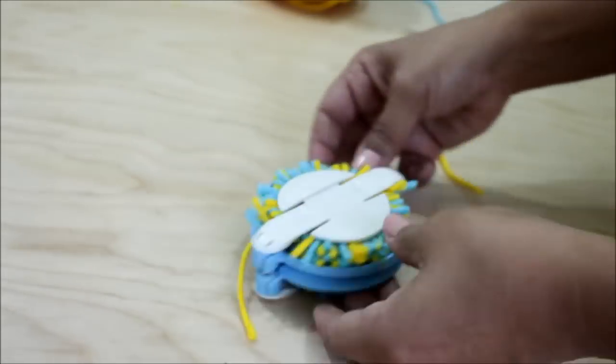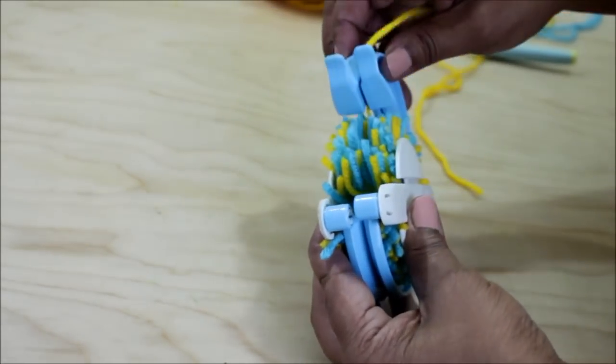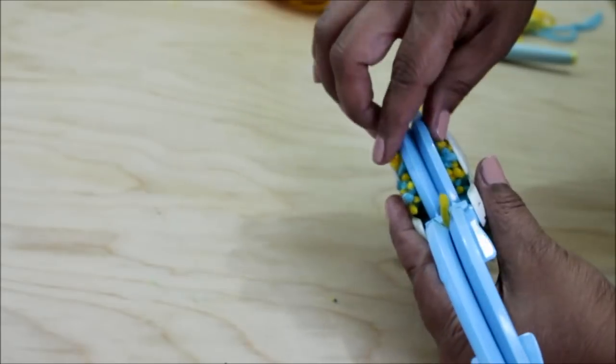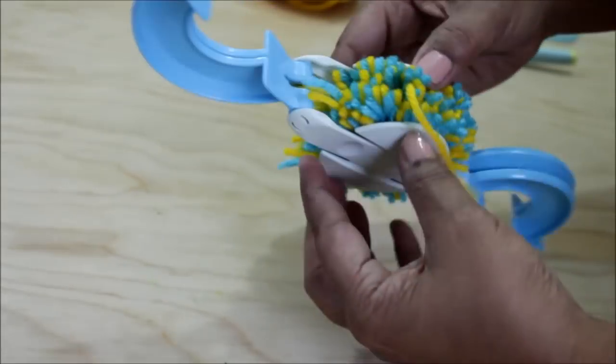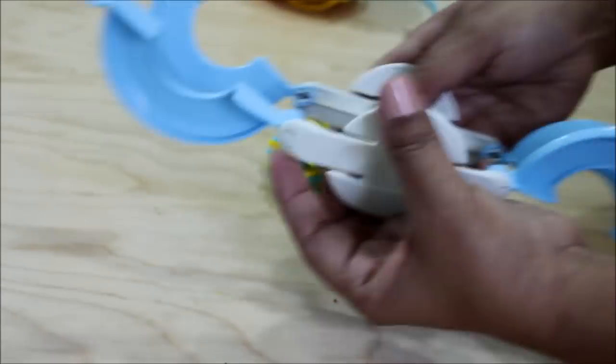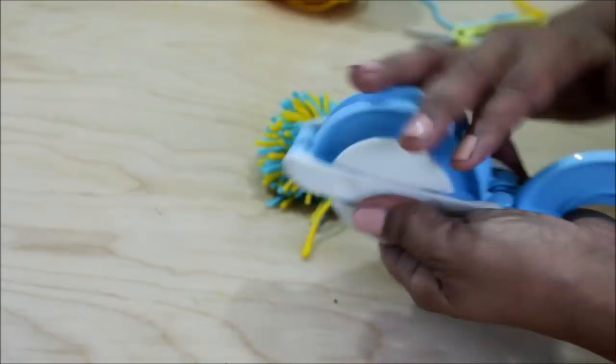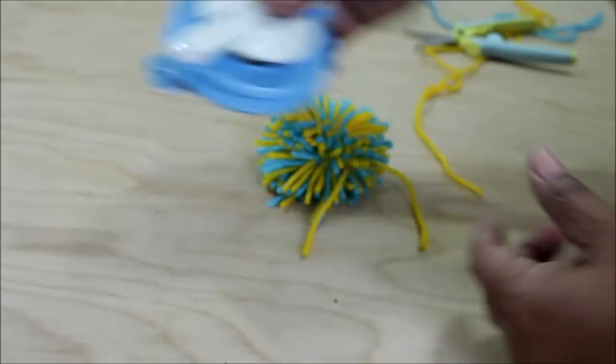And I do two knots just because you know I overkill like that. Flip them open and then you separate your pom-pom maker and put it back together, put it away because you know we're neat.